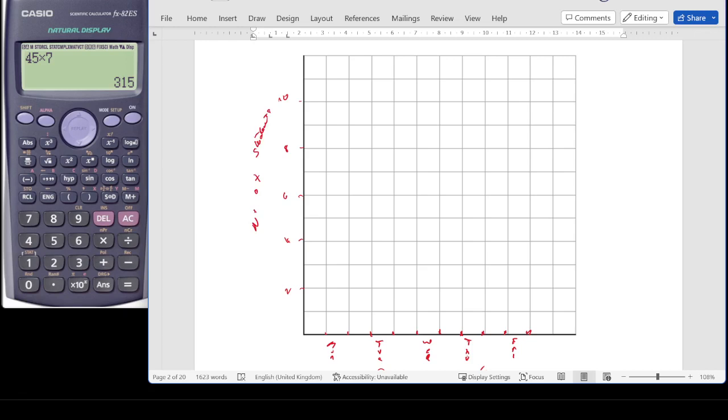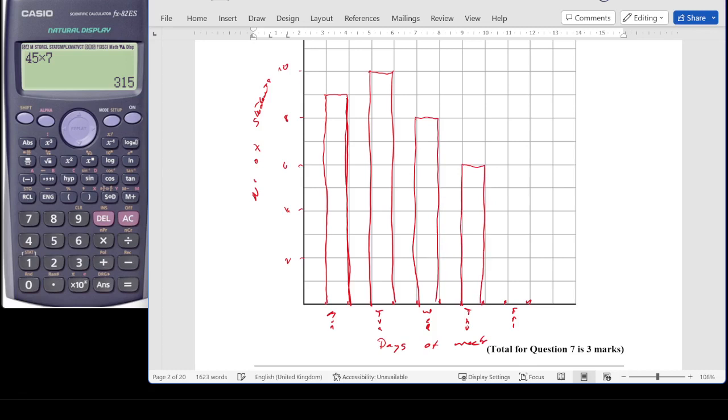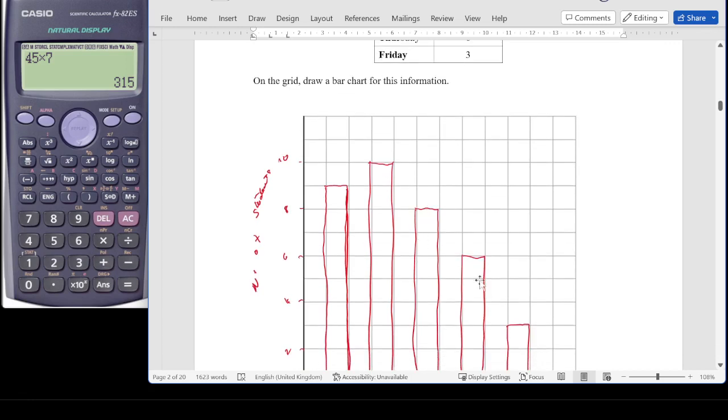My first category was Monday, which needed to go up to 9. So my Monday bar goes up to 9. My Tuesday bar goes up to 10. My Wednesday bar goes up to 8. My Thursday bar goes up to 6. And my Friday bar goes up to 3. Let's double check those totals. 10, 8, 6, 3. Perfect.